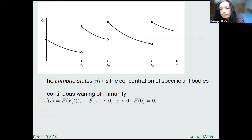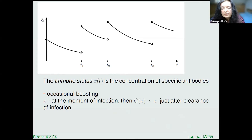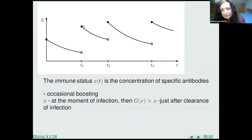What is the immunostatus? The immunostatus is the concentration of specific antibodies which appear after infection with a pathogen, remain in serum, and prevent reinfections. But over time, the number of antibodies decreases until the next infection, decreases according to this equation. During fighting the invader, the immunity is boosted. So if x is the immunostatus at the moment of infection, before infection, then g of x is the immunostatus just after clearance of infection. We assume that the time it takes the immunity to clear infection is negligible.